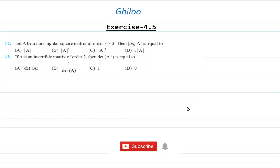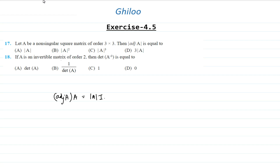There are many ways of doing it, and one of the easiest ways is to use the formula: adjoint of A times A is equal to determinant of A times I. This is one very important formula that we have studied. For a matrix of order 3 by 3, determinant of A is just a scalar value, so scalar times I equals the diagonal matrix with determinant of A on each diagonal entry.